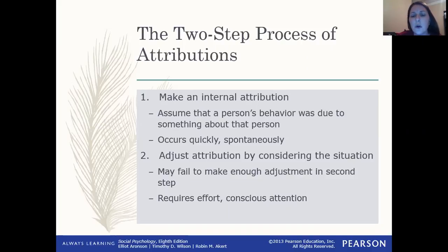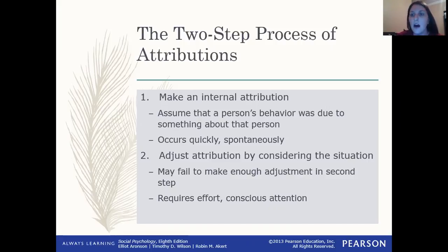This first step really relies on automatic thinking. If we're in a situation where a car jumps out in front of us and we go, 'Oh, that person's such a jerk,' that's something that tends to come very quickly. Many times we actually don't engage in any further thought beyond that — the person is a jerk, or they did that because they're selfish. So our first step is almost always making an internal attribution about a particular behavior, because it's such a quick and spontaneous thing.